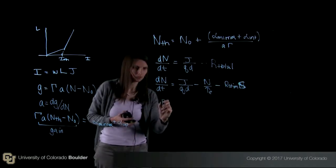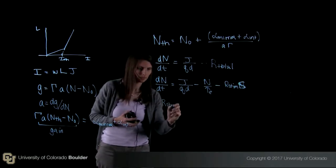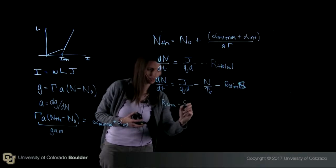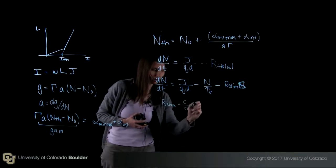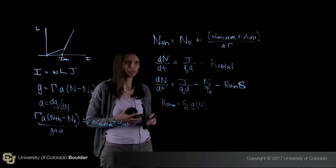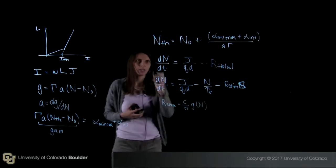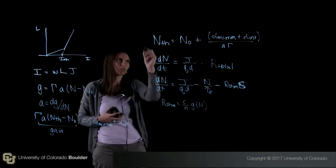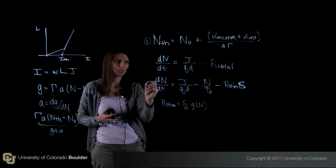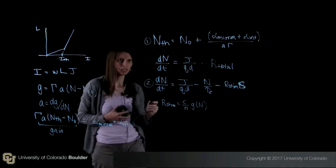We know that r stim equals c over n and then g of n, the gain coefficient as a function of carrier density. If I label my equations, so this is equation one, and here this is equation two, and I combine them...